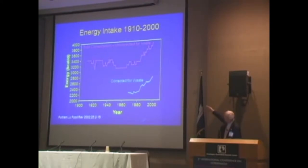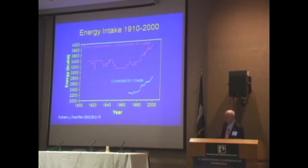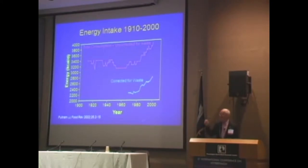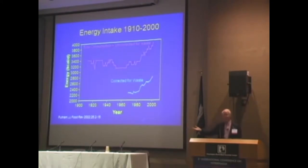Beginning about 1980, there was an increase in the amount of food being produced by farmers relative to the population. On a plate-waste-corrected basis, it's about 400 calories a day — from roughly 2,300 up to 2,700 — during the period between 1980 and 2000. So clearly we have a much larger amount of food available for consumption.